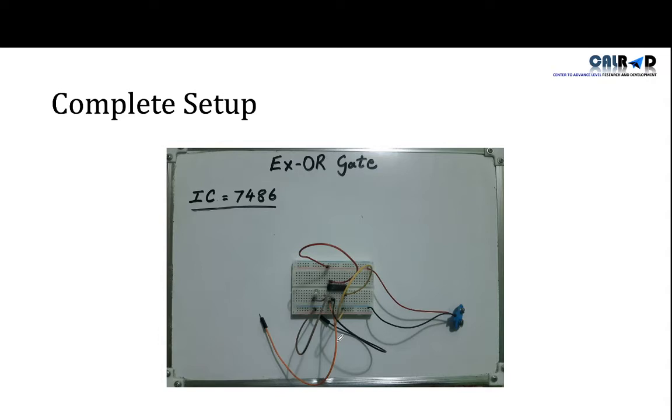So this is the complete setup. Here is our VCC positive terminal, this is negative terminal. These two orange and black parts are for inputs, and this resistor and LED with this brown wire is for our output.